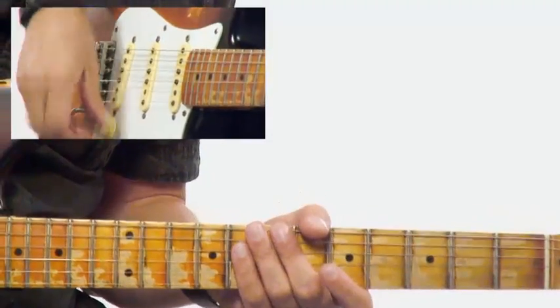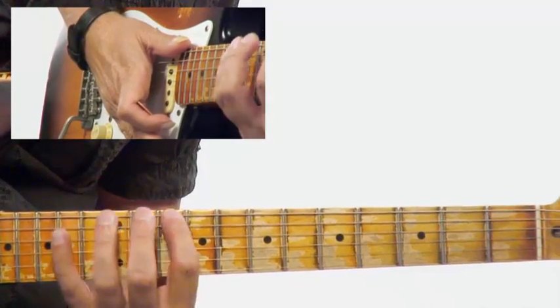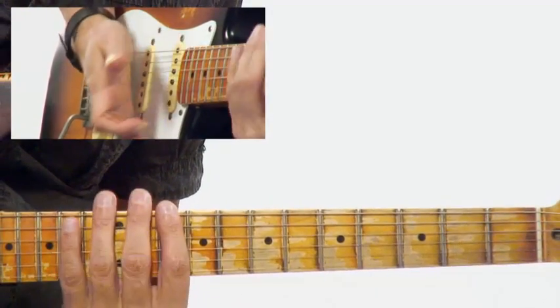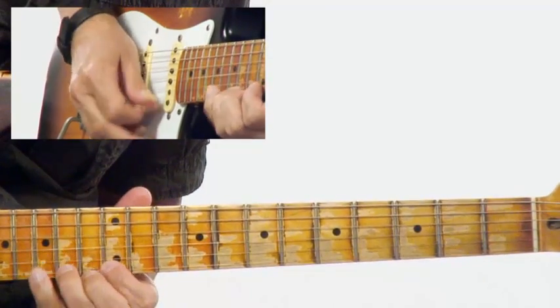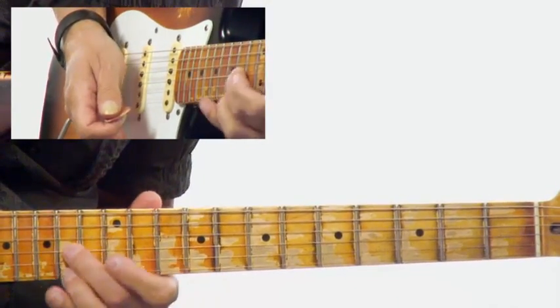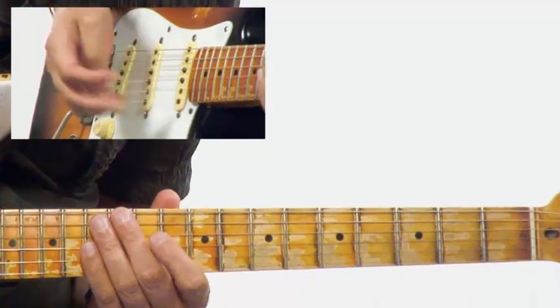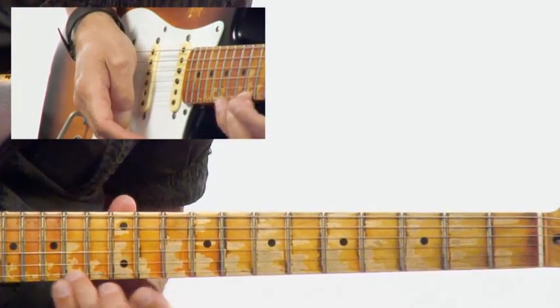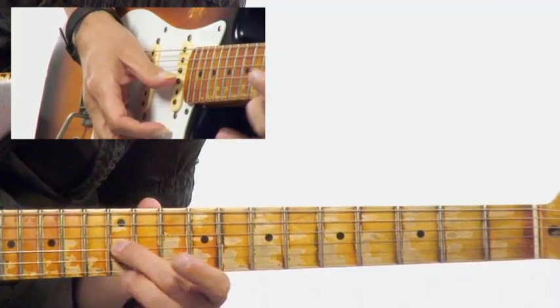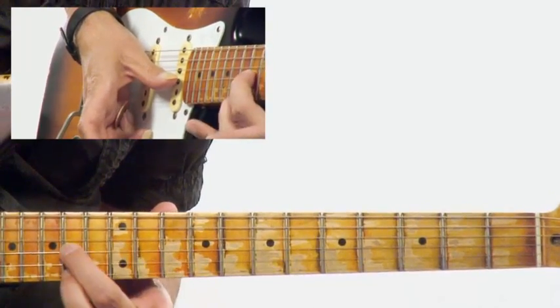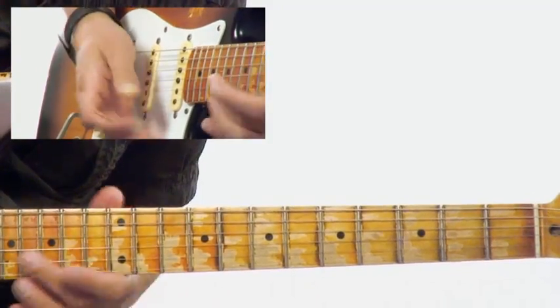This is another B Aeolian lick, and I'm deriving my ideas from this D major scale shape here. I'm utilizing these great double stop ideas and sliding into them, really trying to pull out the F# on top. So I'm playing G and E, then sliding into A and F#—chord tones of our B minor 7 chord.